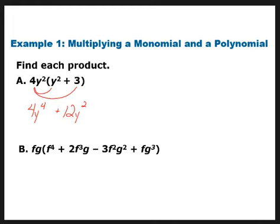The important thing to remember here is back from the beginning of the year when we talked about properties of exponents — if you have the same base, and you are multiplying them together, you just add exponents. That's why y² times y² gives me y⁴. That's a property we deal with when we're multiplying terms together — multiplicative property of exponents. We multiply them, we add the exponents together.